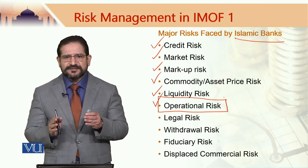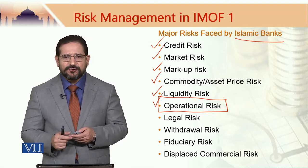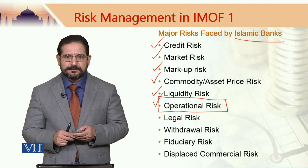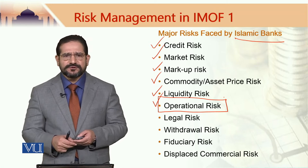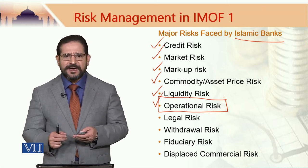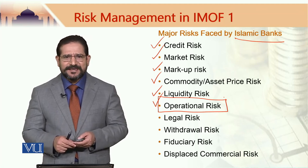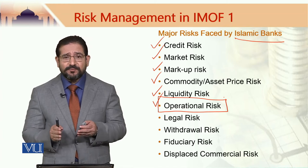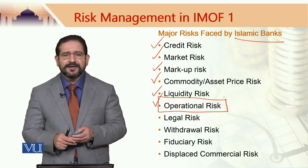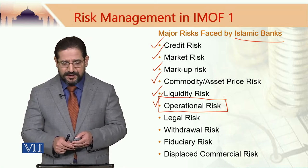I must emphasize that conventional banks also face all these risks. However, the nature and magnitude of these risks in the case of conventional banks is a lot less compared to Islamic banks. Broadly speaking, conventional banks use only one contract — the loan contract or credit contract. They lend money; they deal in money. This is why in many books you find a reference to money management — banks are money managers. In the case of Islamic banks, however, they do not deal in just money but actually deal in a lot of other things as well. Because of this, operational risks faced by Islamic banks are a lot higher compared to their conventional counterparts.